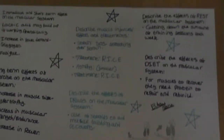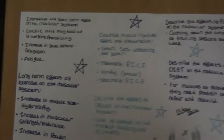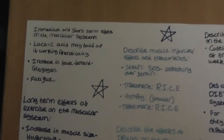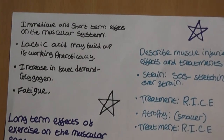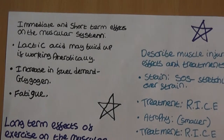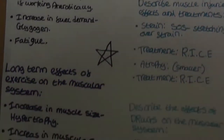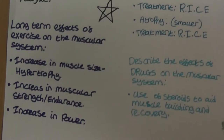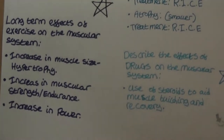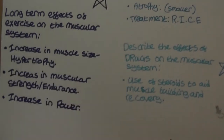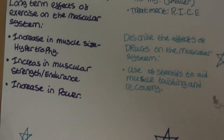Here are some descriptions on the muscular system. Immediate and short-term effects: lactic acid may build up if working anaerobically, increase in fuel demand, glycogen, and fatigue. Long-term effects of exercise on the muscular system: increase in muscle size (hypertrophy), increase in muscular strength and endurance, and increase in power.